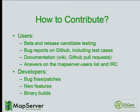How to contribute: you are all power users who can contribute to the software. Even if you can't write code, you can test betas during release cycles, report bugs with useful test cases on GitHub, help with documentation by forking the docs, adding pages, making changes, translating, and submitting pull requests. You can also help other folks on the MapServer users mailing list — if someone asks a question you've dealt with before, just answer it. For developers, bug fixes, patches, new features, and help with binary builds are all welcome.